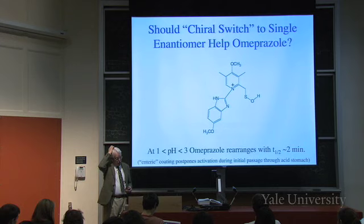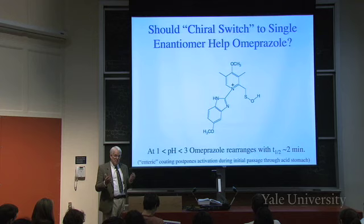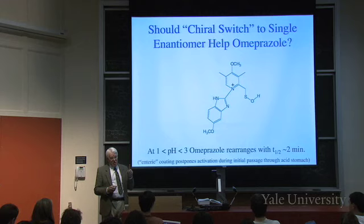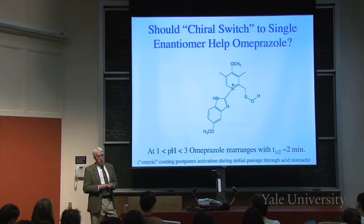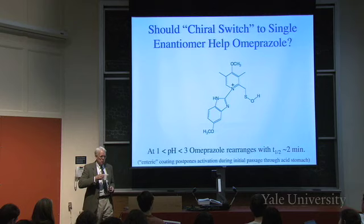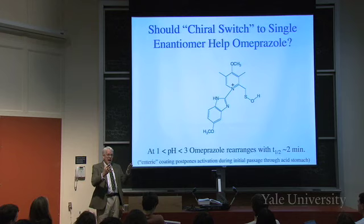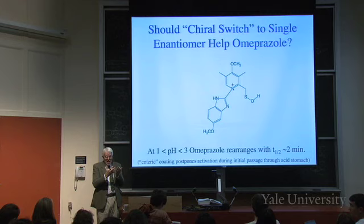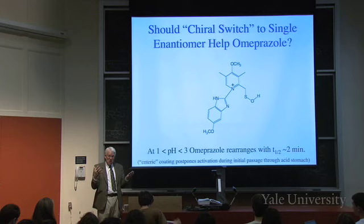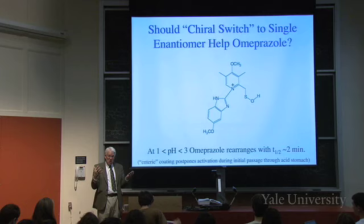Should there be a chiral switch to a single enantiomer? Omeprazole — Prilosec — is a racemate, a 50-50 mixture of the enantiomers at sulfur, not at carbon. If you go to a single enantiomer, will the drug be twice as good? When something interacts with an enzyme, the enzyme is a single hand. So the reacting complex between the enzyme and the drug is diastereomeric if the drug is handed — one will be better than the other.